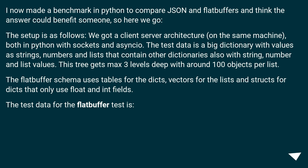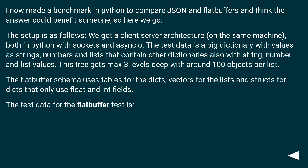I made a benchmark in Python to compare JSON and flatbuffers. The setup is a client-server architecture on the same machine, both in Python with sockets and asyncio. The test data is a big dictionary with values as strings, numbers and lists that contain other dictionaries also with string, number and list values. This tree gets max 3 levels deep with around 100 objects per list. The flatbuffer schema uses tables for the dicts, vectors for the lists and structs for dicts that only use float and int fields.